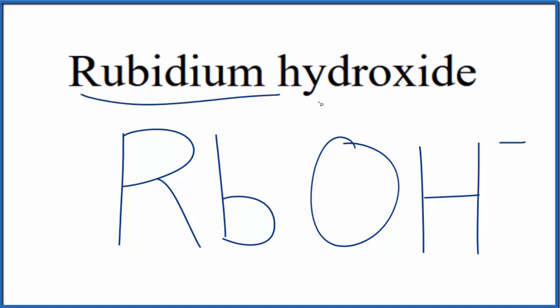So because we have this metal and then a group of nonmetals here, we have an ionic compound, we need to think about the charge.